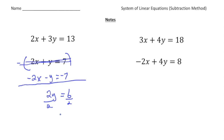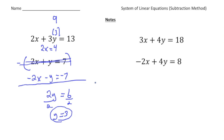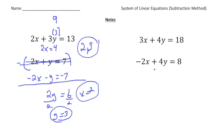Now solve for y: 2y equals 6, so y equals 3. I can take that number and plug it in for y in the first equation. 3 times 3 gives you 9, so 2x plus 9 equals 13. Take away 9 from both sides: 2x equals 4, which means x equals 2. So the solution to this problem is x equals 2 and y equals 3.